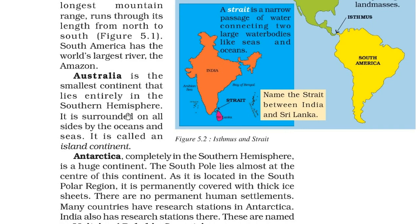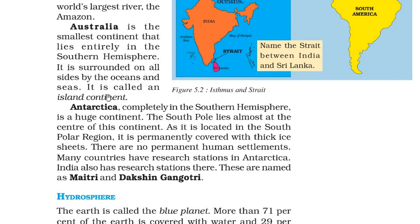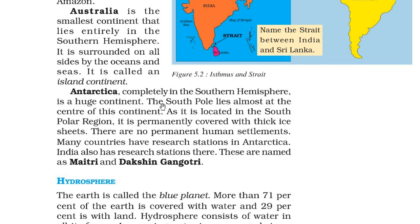Australia is the smallest continent, lying entirely in the southern hemisphere. It is surrounded on all sides by ocean and sea, which is why it is called the island continent. Antarctica is located completely in the southern hemisphere, with the South Pole lying almost at the center of the continent. It is permanently covered with thick ice sheets, and there are no permanent human settlements there.